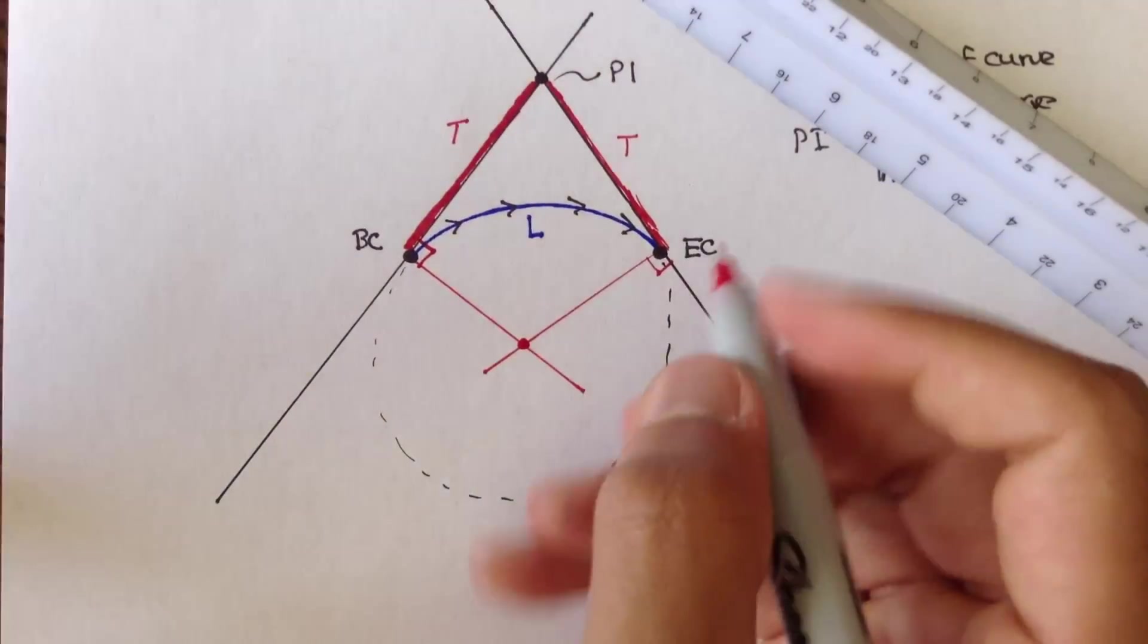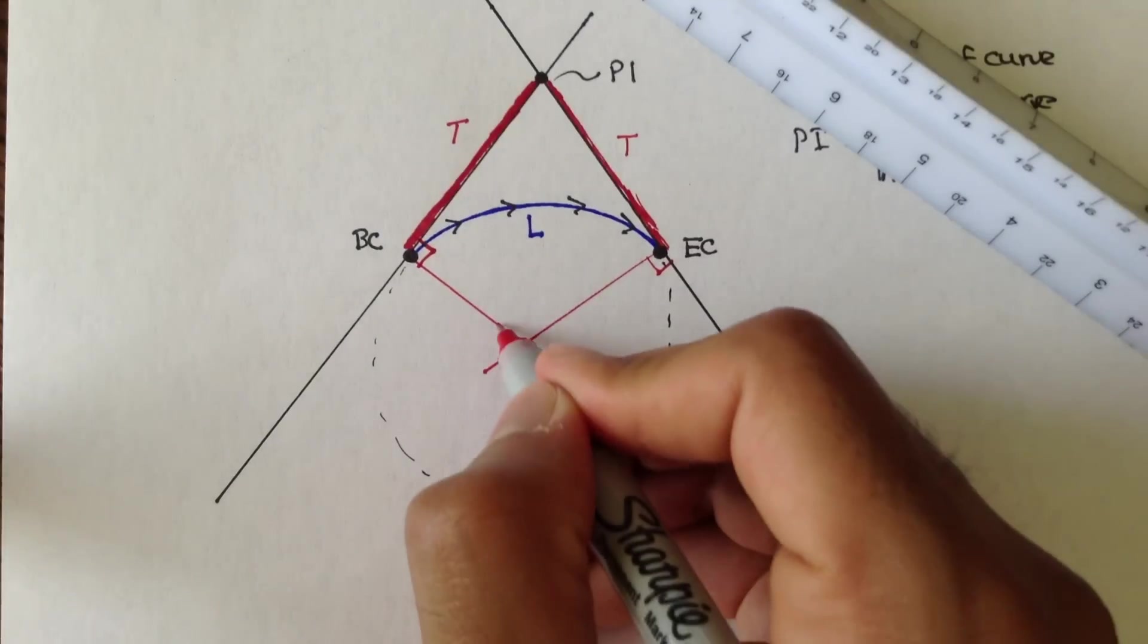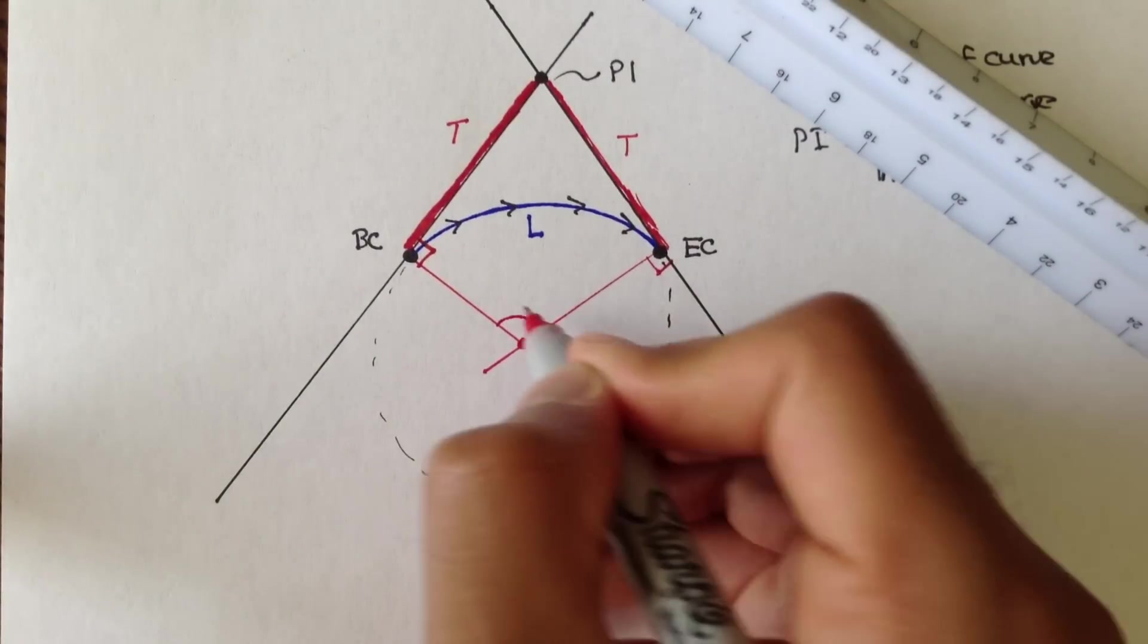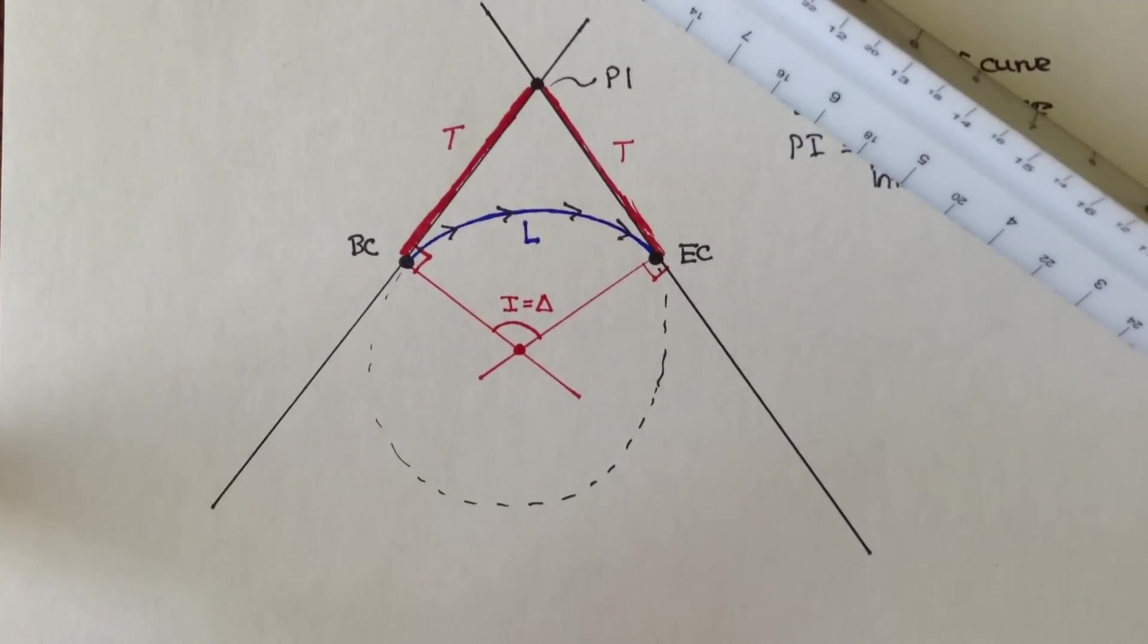This point here creates an angle, and this angle is called the interior angle, or delta.